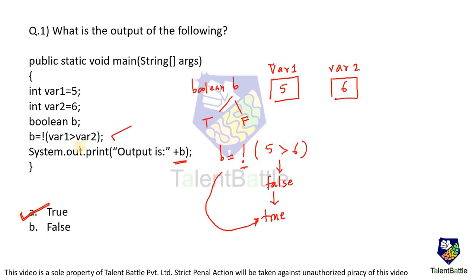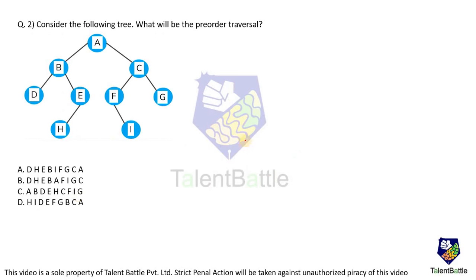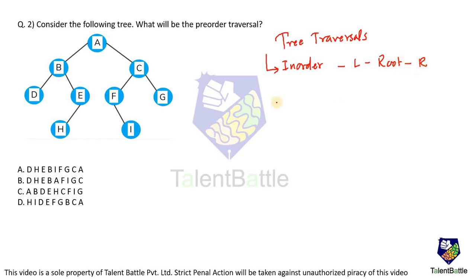You have to properly understand the given expressions and then finalize your answer. Moving on to the next question: consider the following tree — what will be the pre-order traversal? Whenever it comes to tree traversal there are three types. In in-order traversal: left child, then root, then right child. In post-order: left child, then right child, then root.